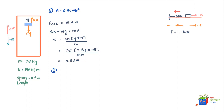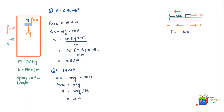Part two asks for the stretch if the elevator is moving upward at a constant velocity of 14 meters per second — it has finished accelerating and is now at steady speed. Since velocity is constant, acceleration is zero, so kx = mg, giving x = mg / k. Substituting the values: x = 0.47 meters.